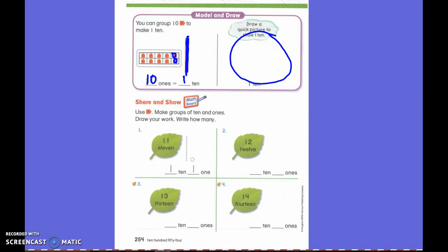You are not going to draw ten little squares anymore because that's going to take a lot of time. What I want you to do for a quick picture is to draw a line and that's going to represent ten. Then if I have any extra ones, then I can draw my extra ones on the side.